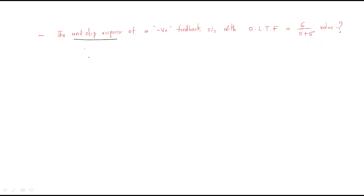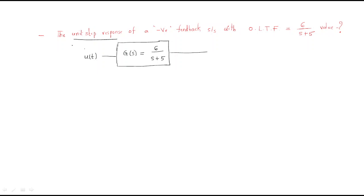The input is u(t), a step function, which is applied to the open loop transfer function G(s) = 6/(s+5). This is the open loop transfer function, so we have to put it in a closed loop system. The input is u(t) and the output is C(t), which we need to find.